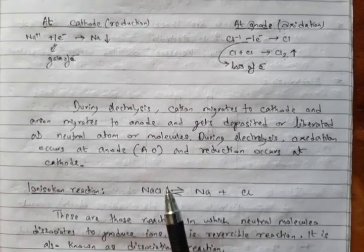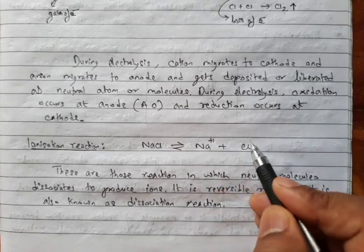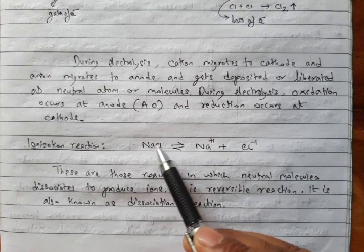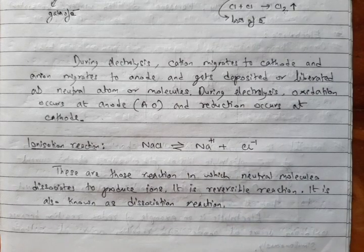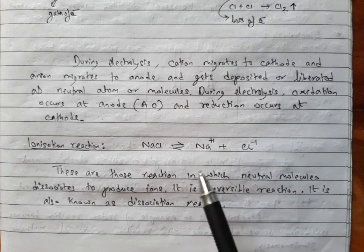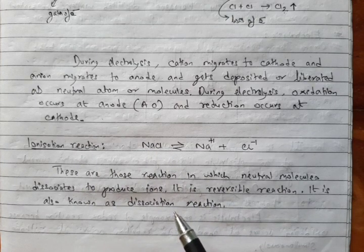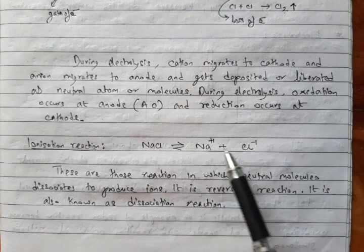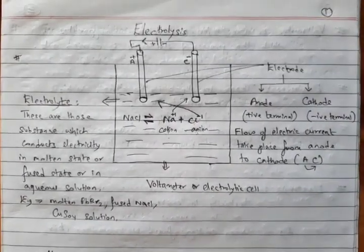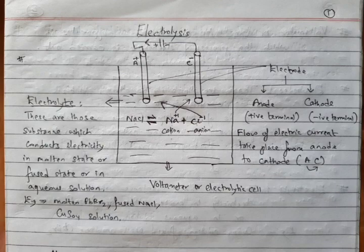This much is all about electrolysis so far. I have discussed ionization reaction — whenever a neutral molecule dissociates to produce ions such a reaction is known as ionization reaction, also called dissociation reaction, and they are usually reversible. I have just introduced electrolysis. You can repeat the video to understand it one more time. I'll recapitulate in my next video. Thank you.